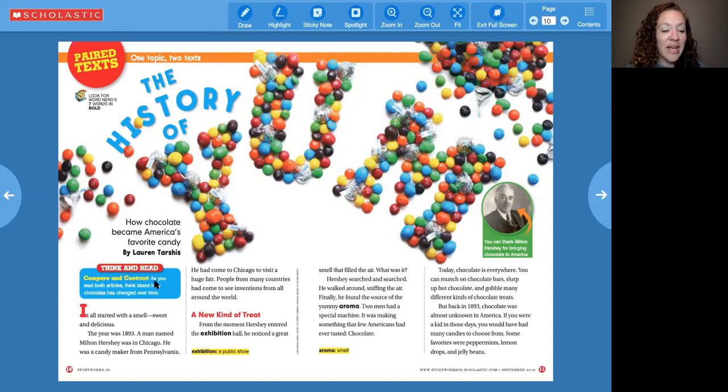Let's keep going. Think and read. Compare and contrast. As you read both articles, think about how chocolate has changed over time. Hmm. Okay. It's giving me a purpose for reading. I'm going to compare and find the similarities and contrast and find the differences. All right. Let's get started. It all started with a smell, sweet and delicious. The year was 1893. A man named Milton Hershey was in Chicago. He was a candy maker from Pennsylvania. He had come to Chicago to visit a huge fair. People from many countries had come to see inventions from all over the world. Pause. I think that my prediction about it being nonfiction is correct because I saw a date, 1893. I see some names and I see some real places. Let's keep going.